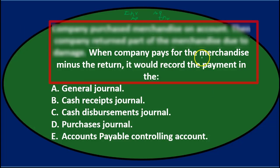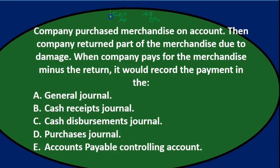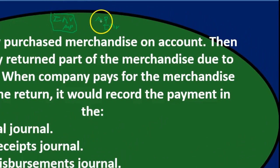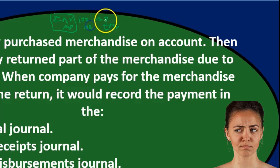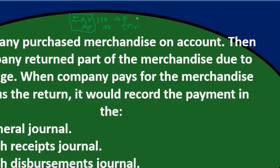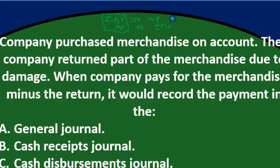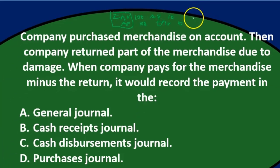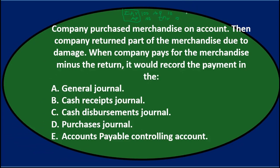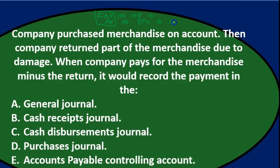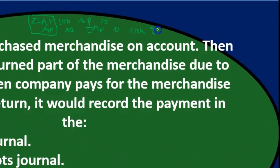When the company pays for the merchandise minus the return, meaning we're paying the original transaction minus what we gave back — for example if we debited $100 originally and returned $10 of damaged merchandise, we still owe $90. The journal entry would be a debit to accounts payable for $90 and a credit to cash for $90.